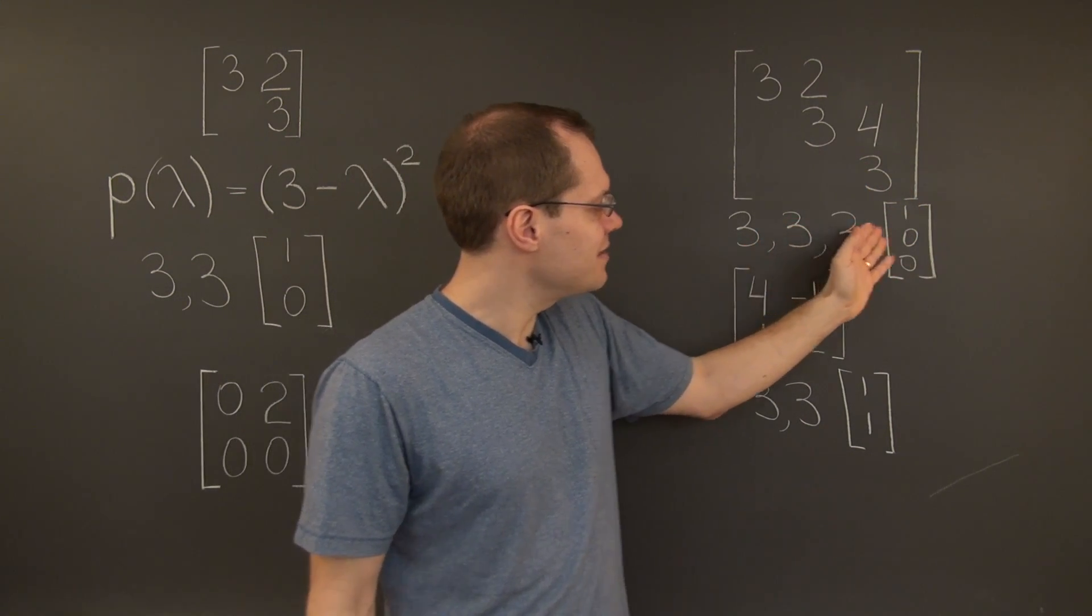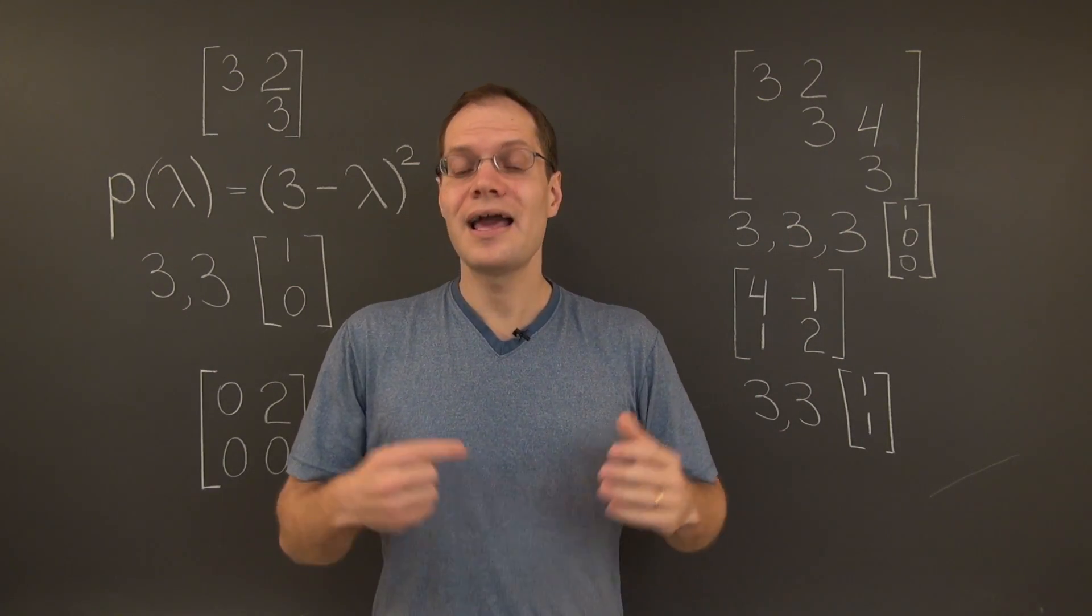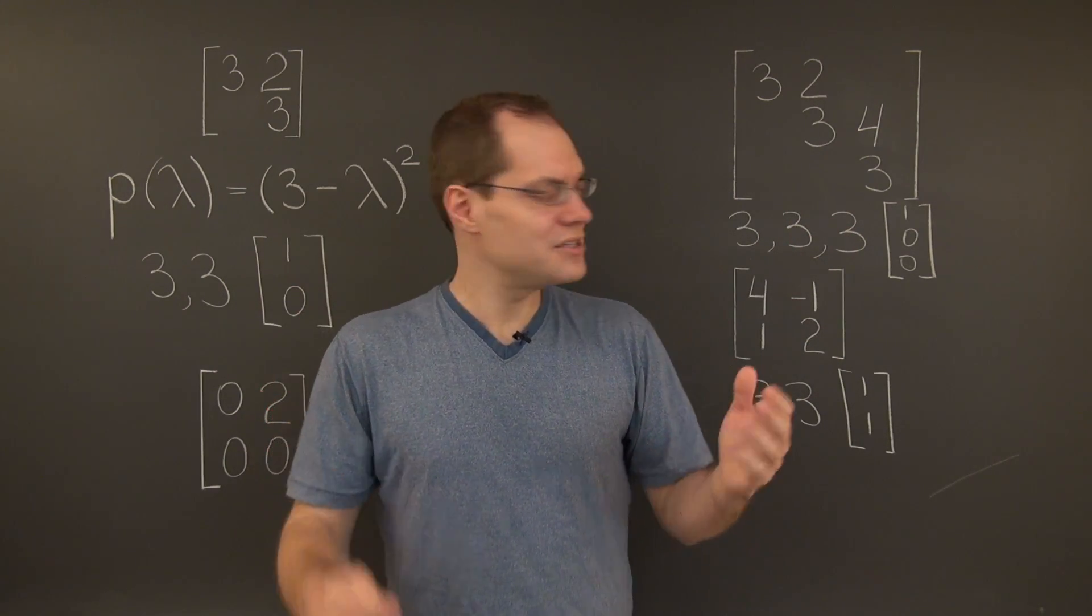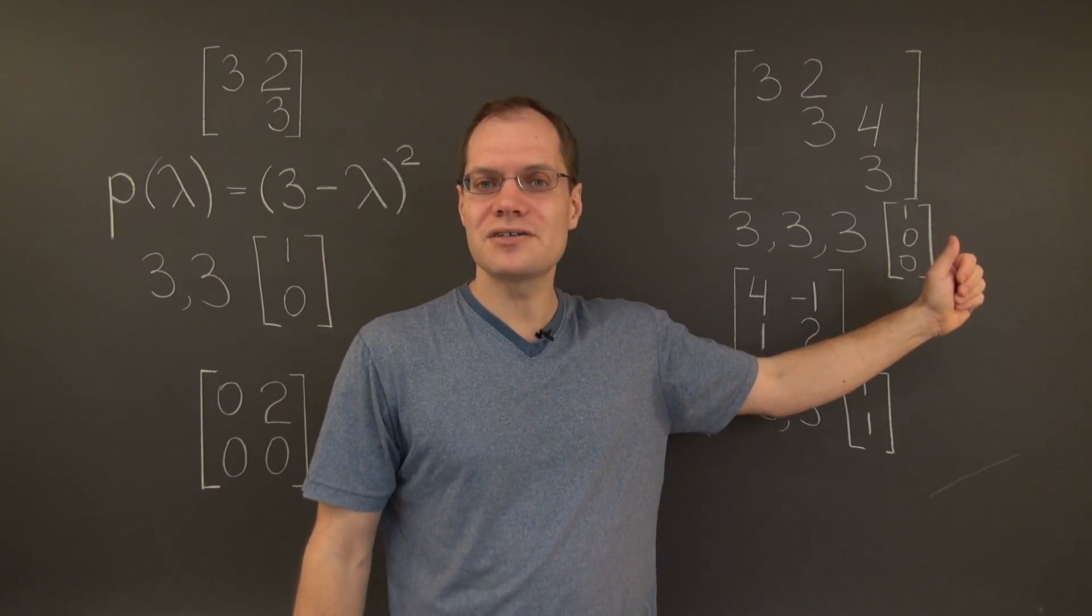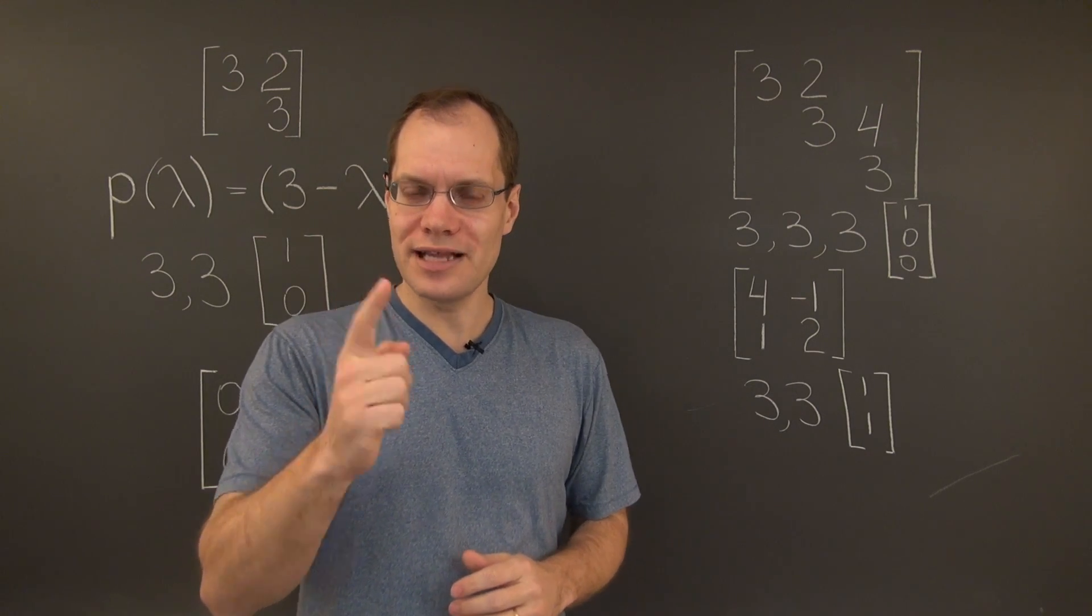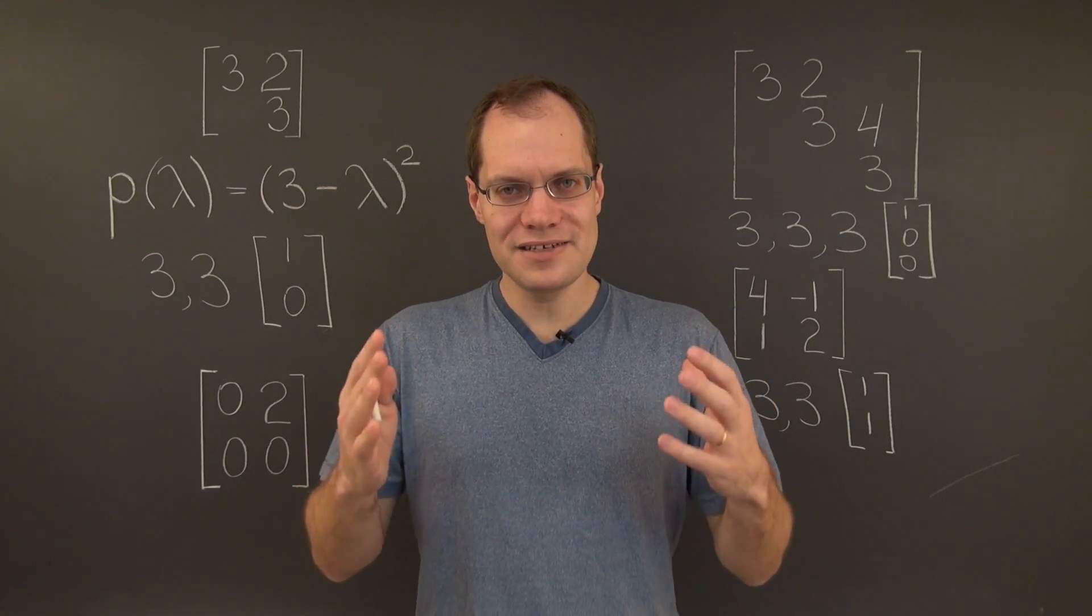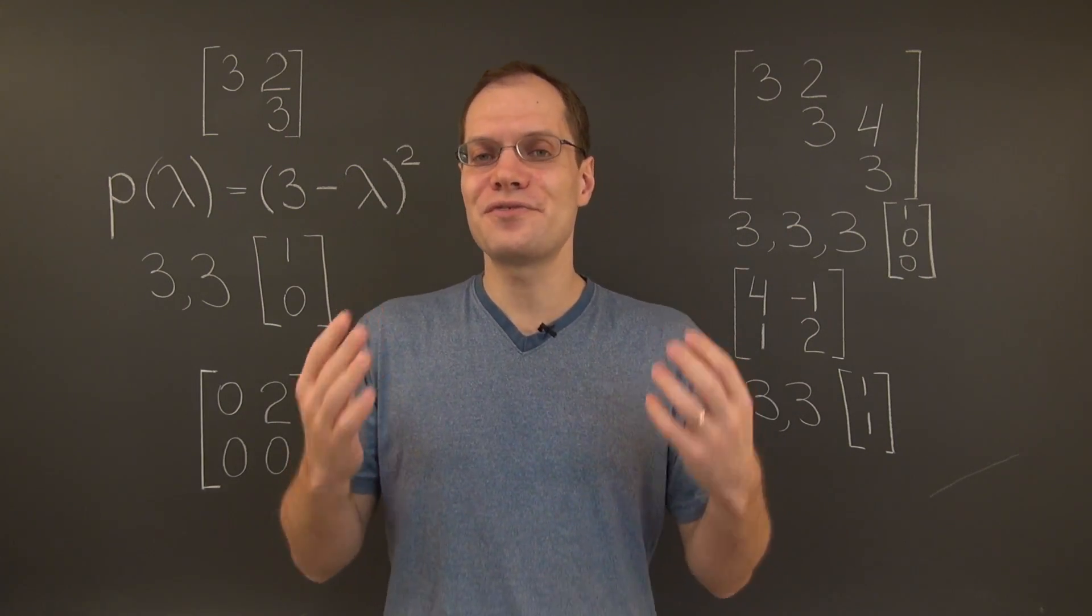What's important is that the dimension of this eigenspace is 1. And so, the defect in this case is 2, 3 minus 1. And so, it's easy to see that you could come up with a matrix with any defect you want. And finally, I would like to make this note.